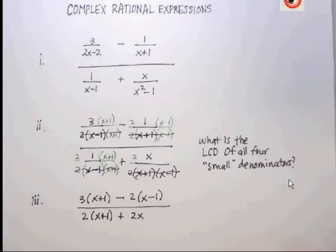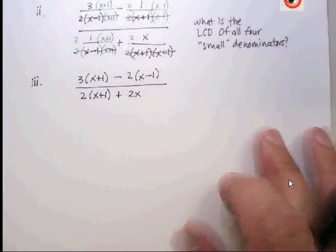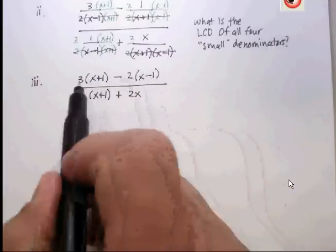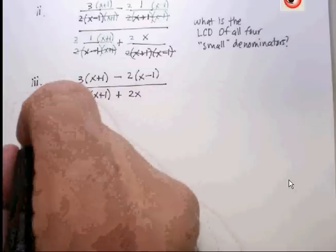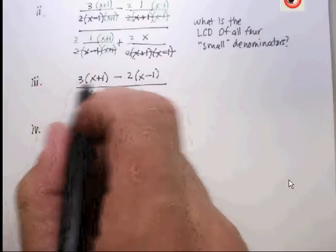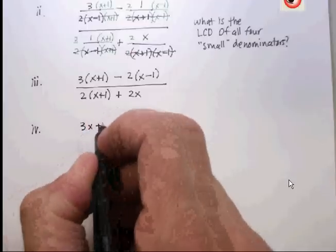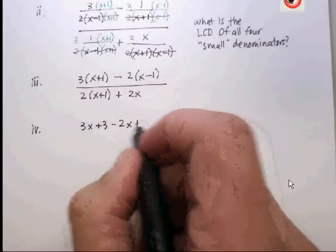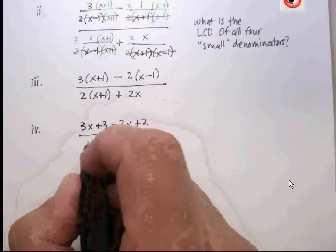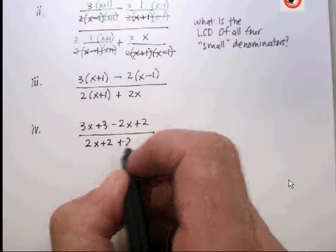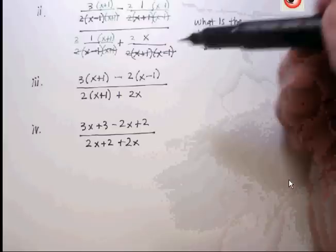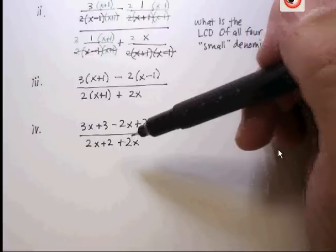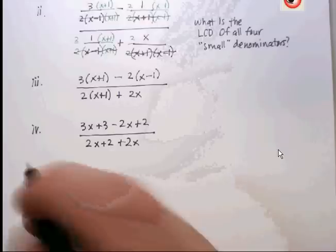Now let's continue on. Can I start factoring out ones here? No I can't. I basically have to get everything in a multiplied form. Okay, so let's do that. Let's go ahead and distribute. I get 3x plus 3 minus 2x plus 2 over 2x plus 2 plus 2x.